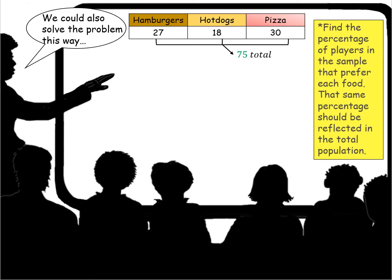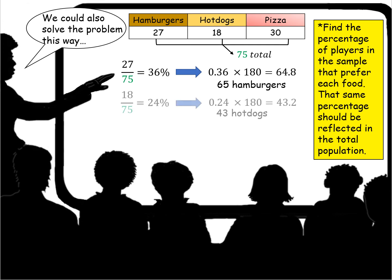Now there's another way to look at this. We could have solved the problem this way, and that is by finding the percentage of players in the sample that prefer each food. That same percentage should be reflected in the total population. So 27 out of 75 preferred hamburgers. That's 36%. So then I take 36% of our total population, 180, and I find once again 65 hamburgers.